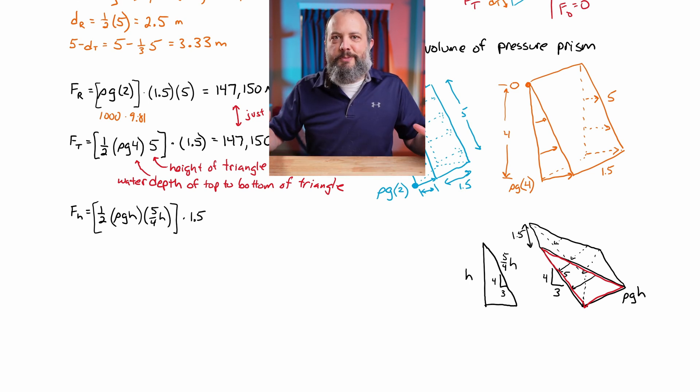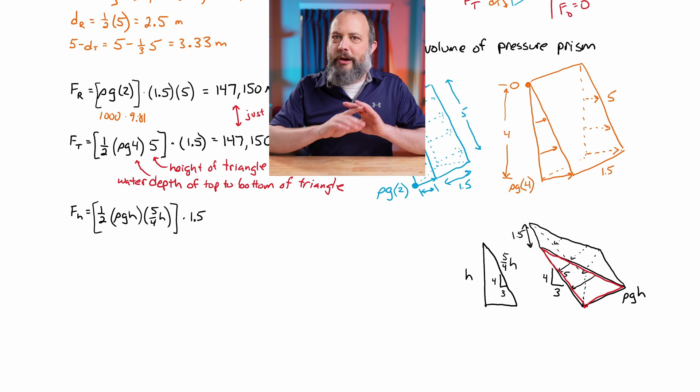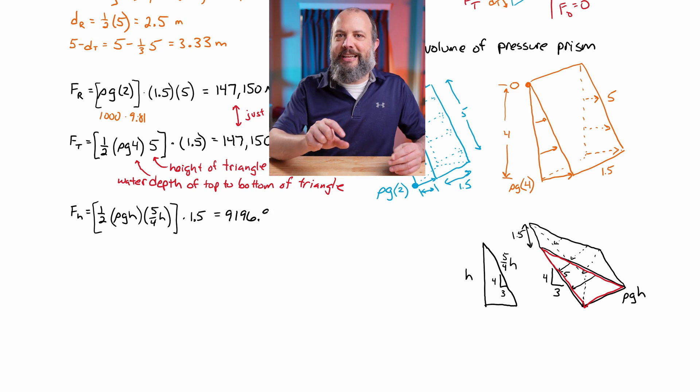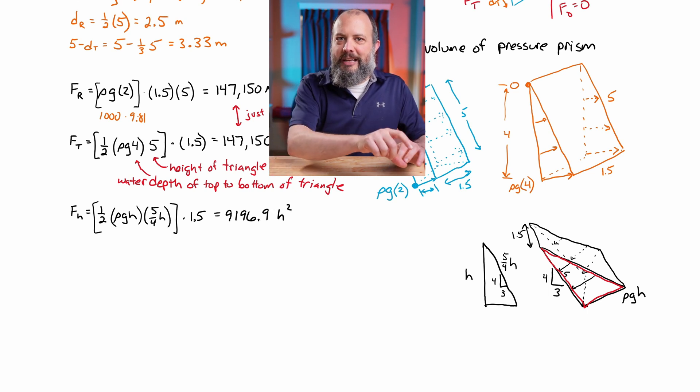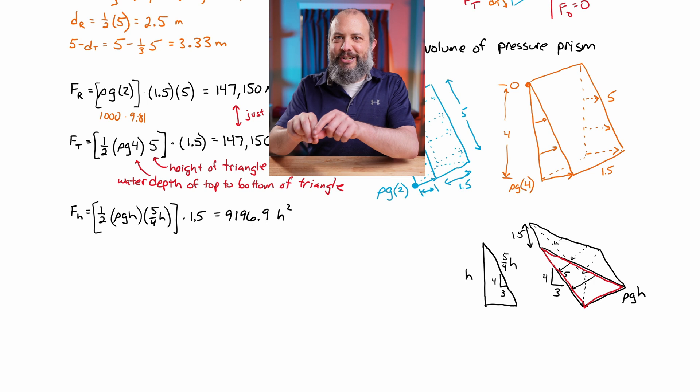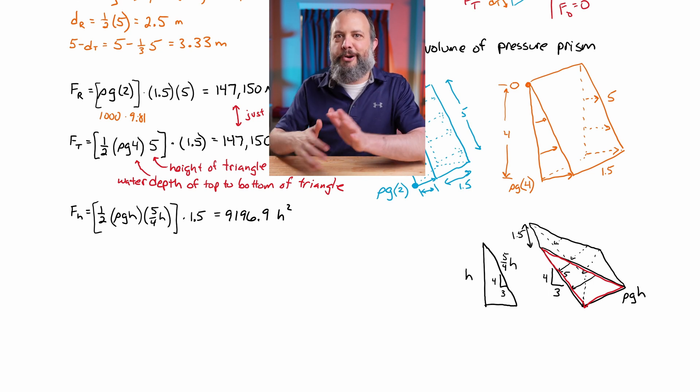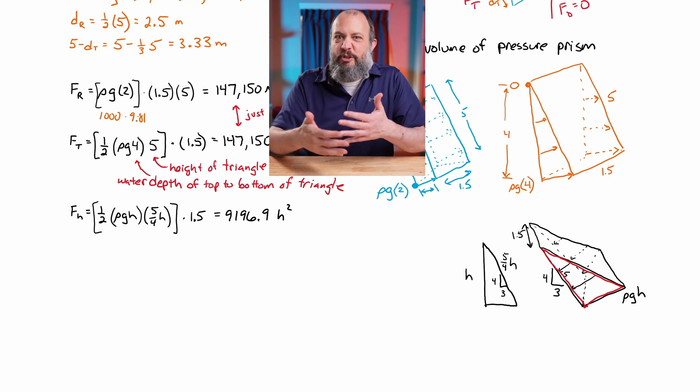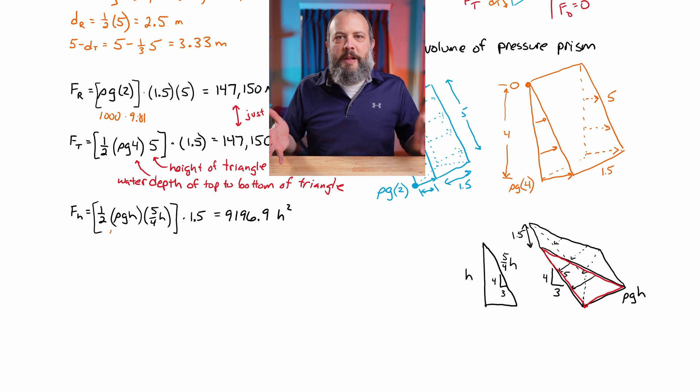Of all of the places to mess up on this problem, this is the number one spot where I would expect students to mess up most of the time. I would expect the most common mistake for this problem to be using h, the depth of the water, as the distance of the surface of contact with the water on the right side of the gate, and not accounting for the fact that since it's at an angle, it's actually a little bit larger than h. So multiplying all that out, we get about 9197 times h squared as the force acting on the right-hand side.